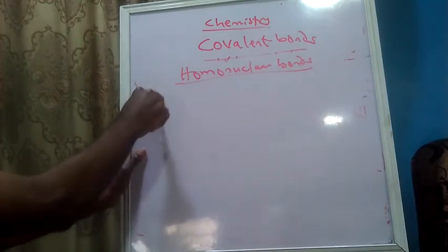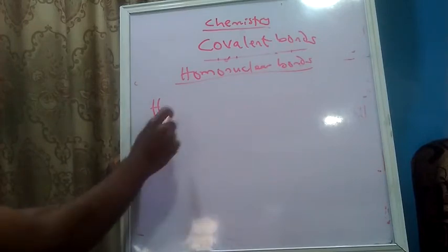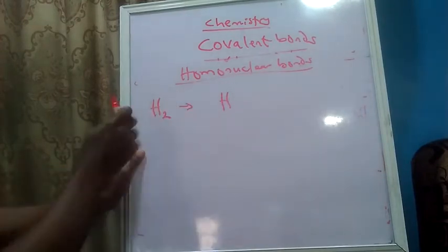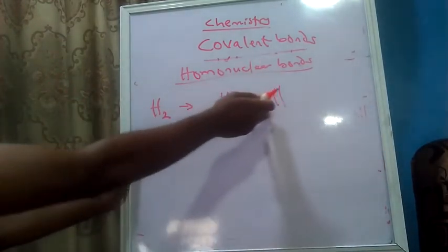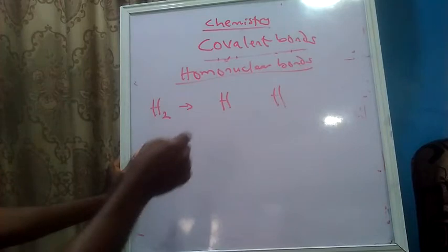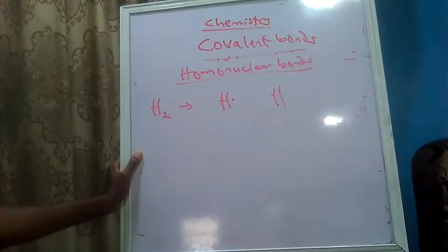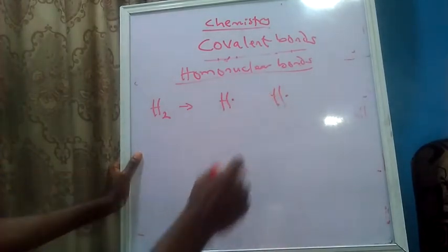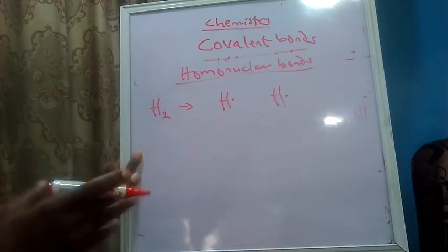Take hydrogen for instance. I want to form the covalent bond that exists in the hydrogen molecule H2. H2 means hydrogen is having two atoms — the molecule is formed from two atoms of hydrogen, meaning a bond is holding the atoms together. Two hydrogen atoms: remember hydrogen has one valence electron, so I place a dot by the right-hand side. The second hydrogen also has one valence electron, represented as a dot on that side. For convenience, I will bring this dot to the other side so it can get closer to the first hydrogen atom.